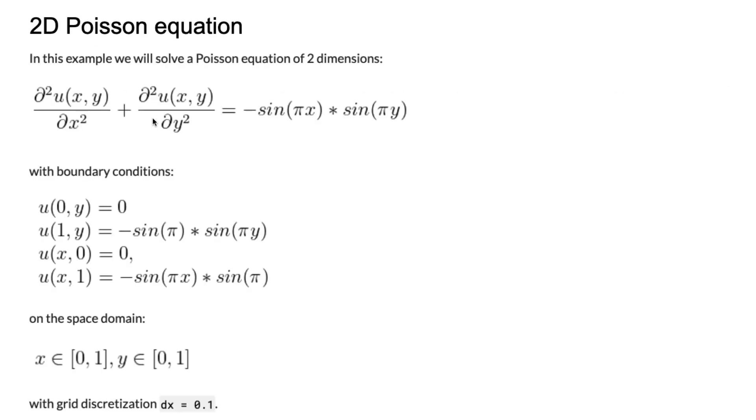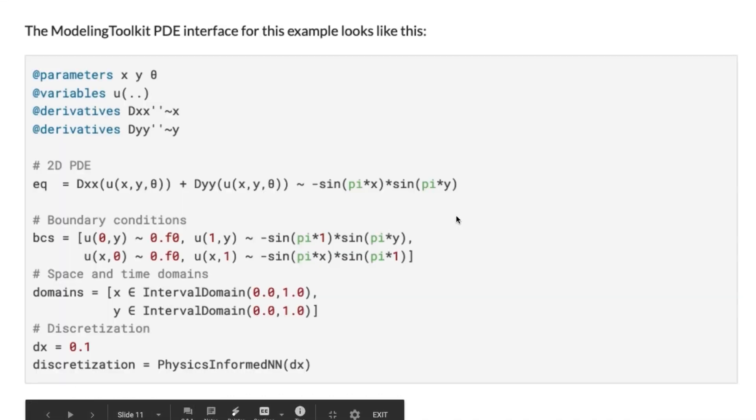I'm not going to stop on the math and how this works; I'll just show an example in Julia code and how it works. Let's look at an example: a two-dimensional Poisson equation. In symbolic form, it looks like this. We also have some certain boundary conditions on a space domain where x is from 0 to 1, y is from 0 to 1, and a sum of grid discretization where dx equals 0.1.